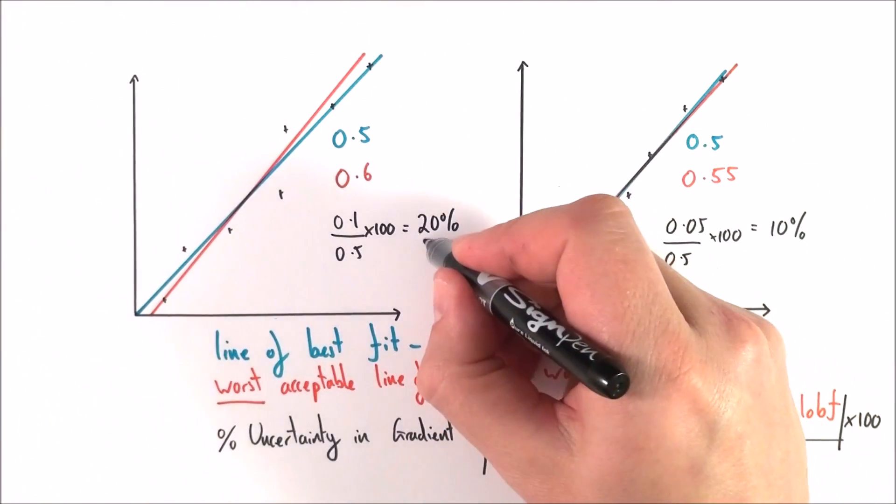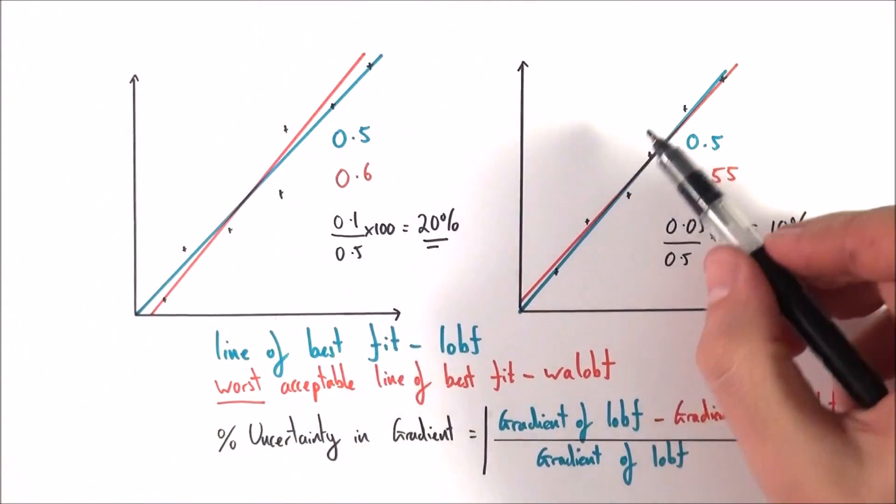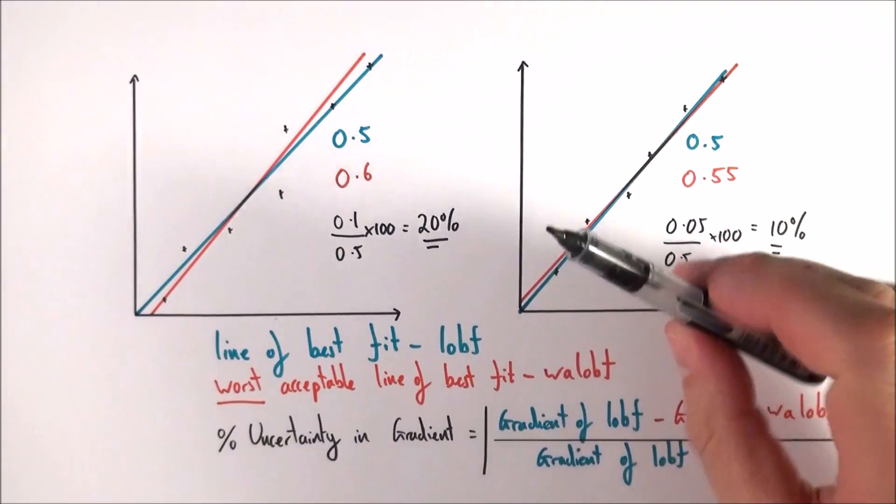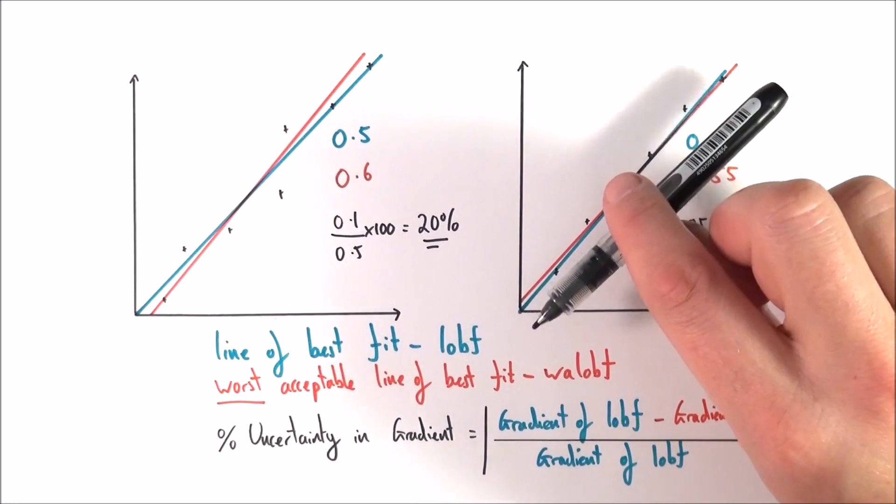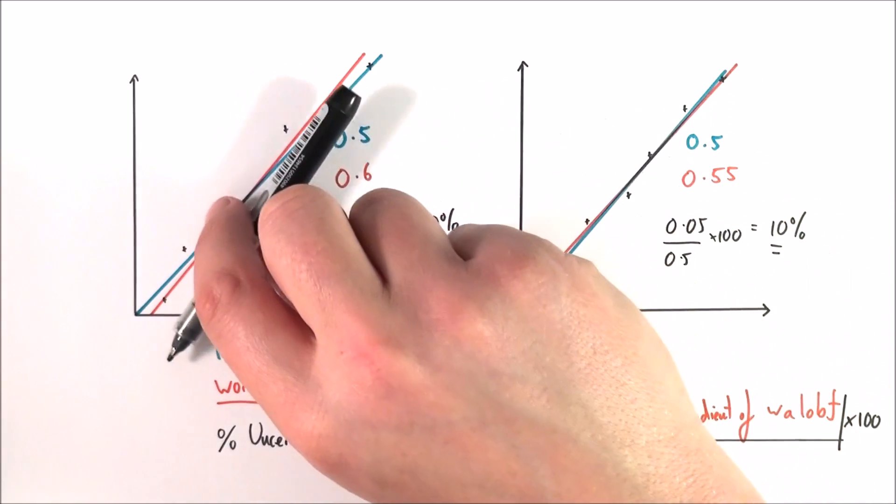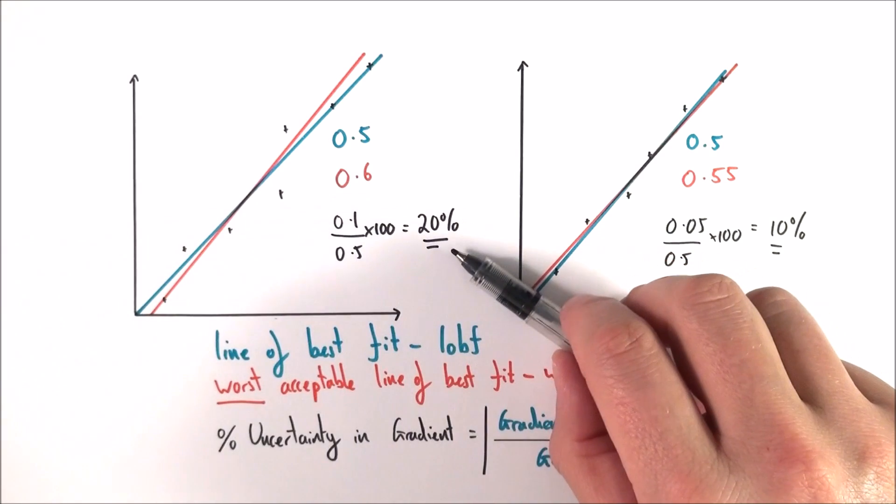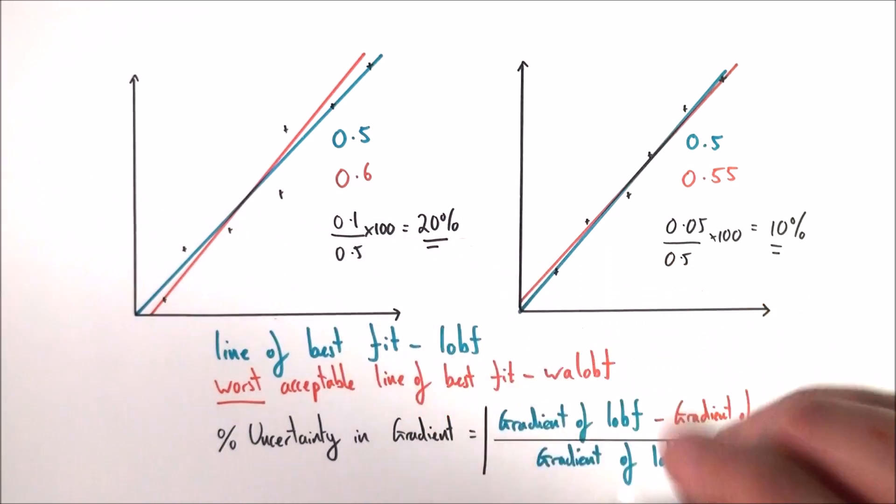So what we've now done is we've kind of started to quantify with some kind of number how much scatter there is on this graph. Basically, the more scattered the data, the less reliable and the less certain we are about that, and therefore it has a greater uncertainty, which we can give as our percentage uncertainty in the gradient.